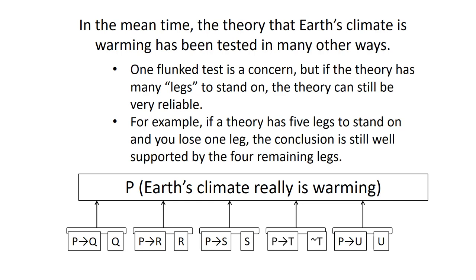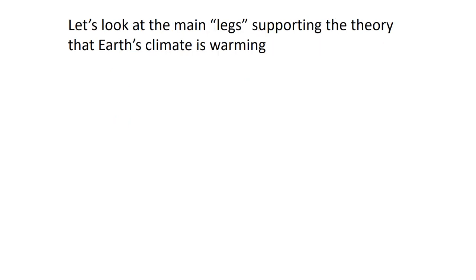So let's say you have a theory that has five legs to stand on. We've got five really good arguments in the form of affirming the consequent inductively that support the argument. So if you lose one leg, there are still four left, and it can still be a very well-supported argument. What I want to do now is look at the main legs supporting the theory that Earth's climate is warming — what are the main lines of evidence?